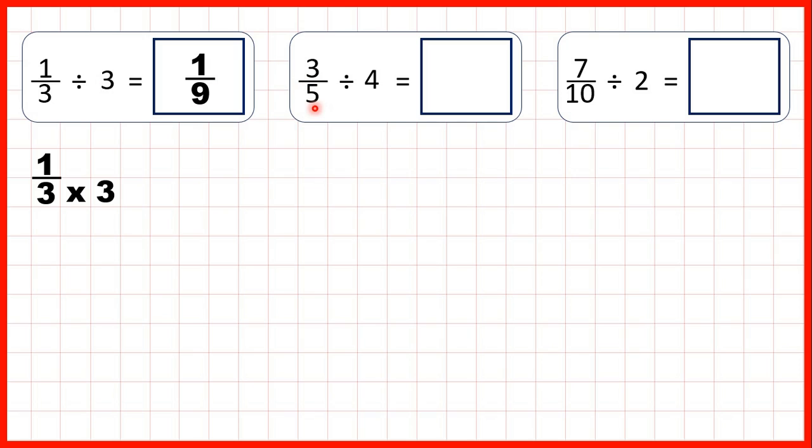Now we have 3 fifths divided by 4. Well, we write out the fraction and then rather than dividing, we multiply the denominator by the number that we're dividing by.